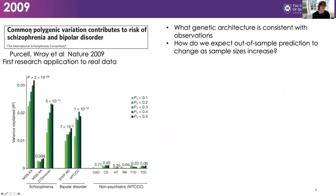Back to 2009: this very first paper was the first where we made estimates of what we now call SNP-based heritability, and the first paper where we looked at out-of-sample prediction. This was the iconic figure from that paper. On the y-axis was the Nagelkerke R-squared, predicting from the International Schizophrenia Consortium into other independent samples — here another European sample called the MGS sample. The different colour bars reflect using the basic p-value clumping and thresholding method with different p-value thresholds.